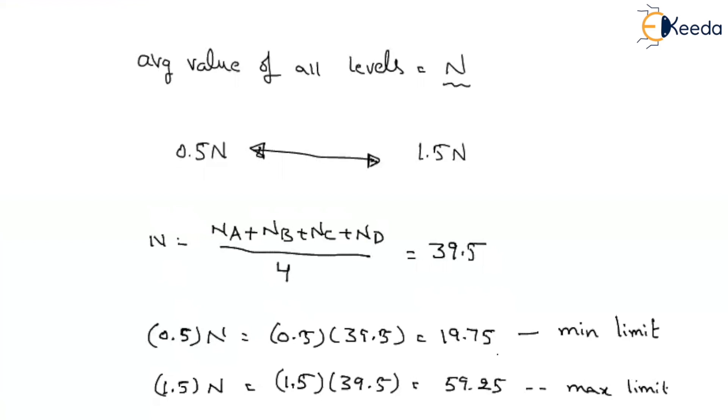So, the independent values, that is NA, NB, NC and ND, should fall within this limit. If they are not falling within this limit, then we should not consider them in the average. What is the NA value? 20. Is it falling within this limit or out of the limit? I think it is falling within the limit. Why? Because 20 is greater than 19.75. Okay, consider.